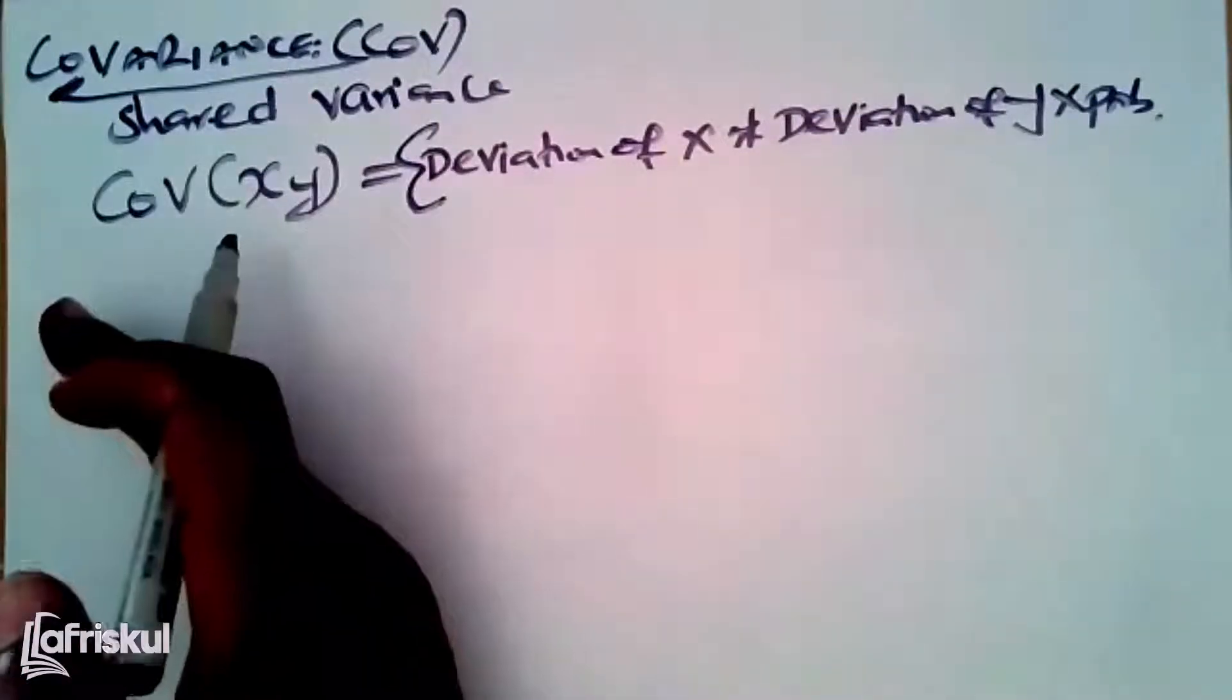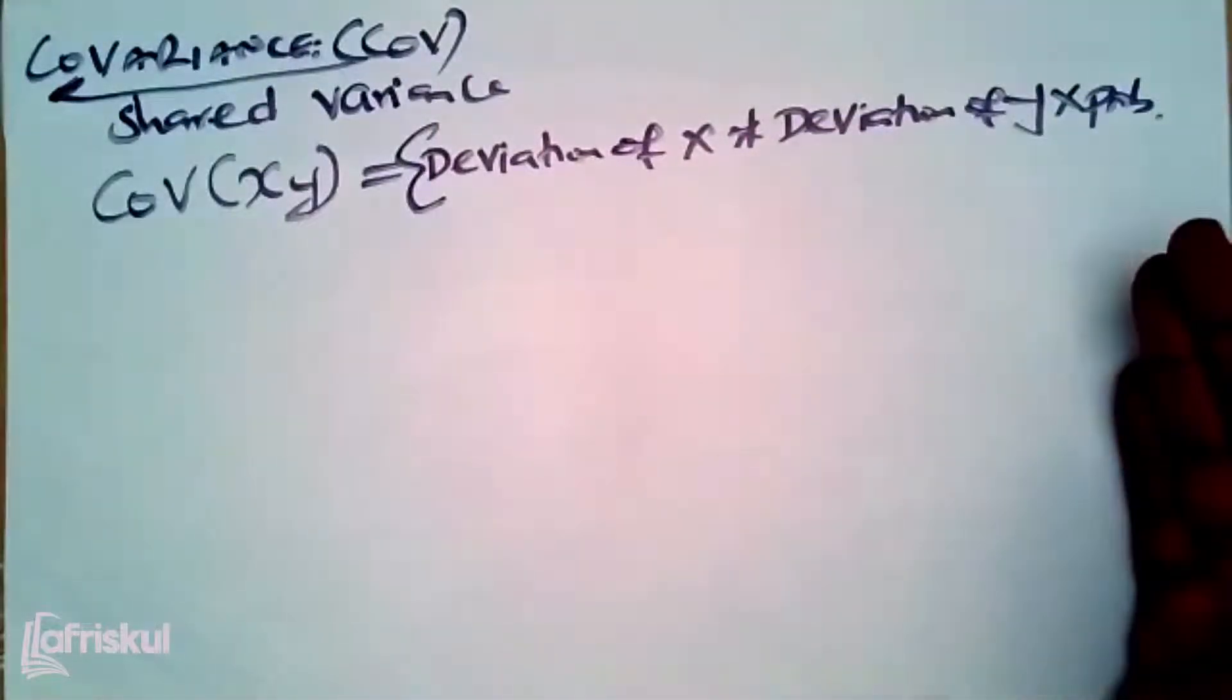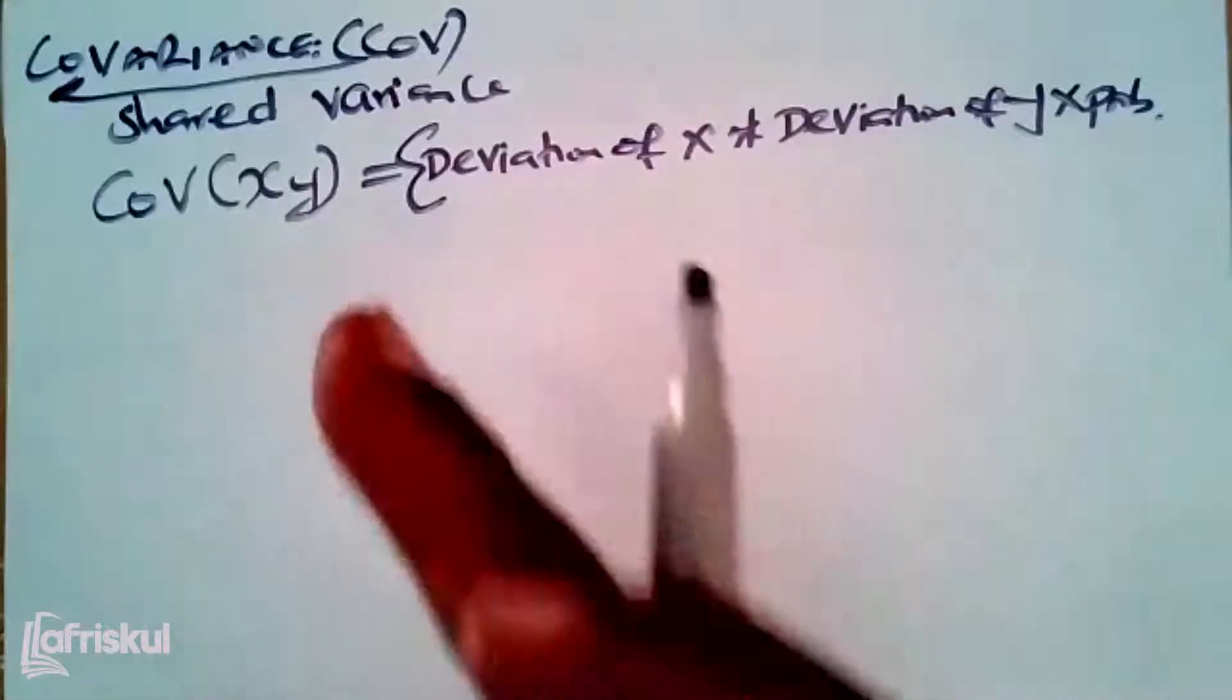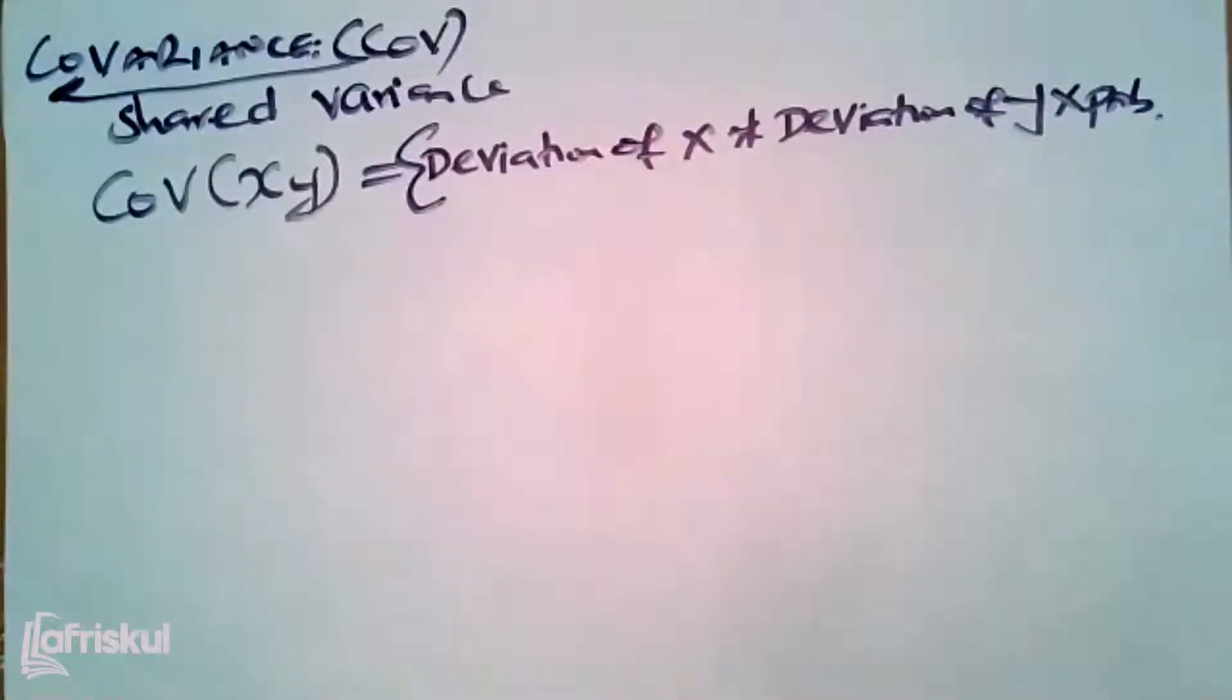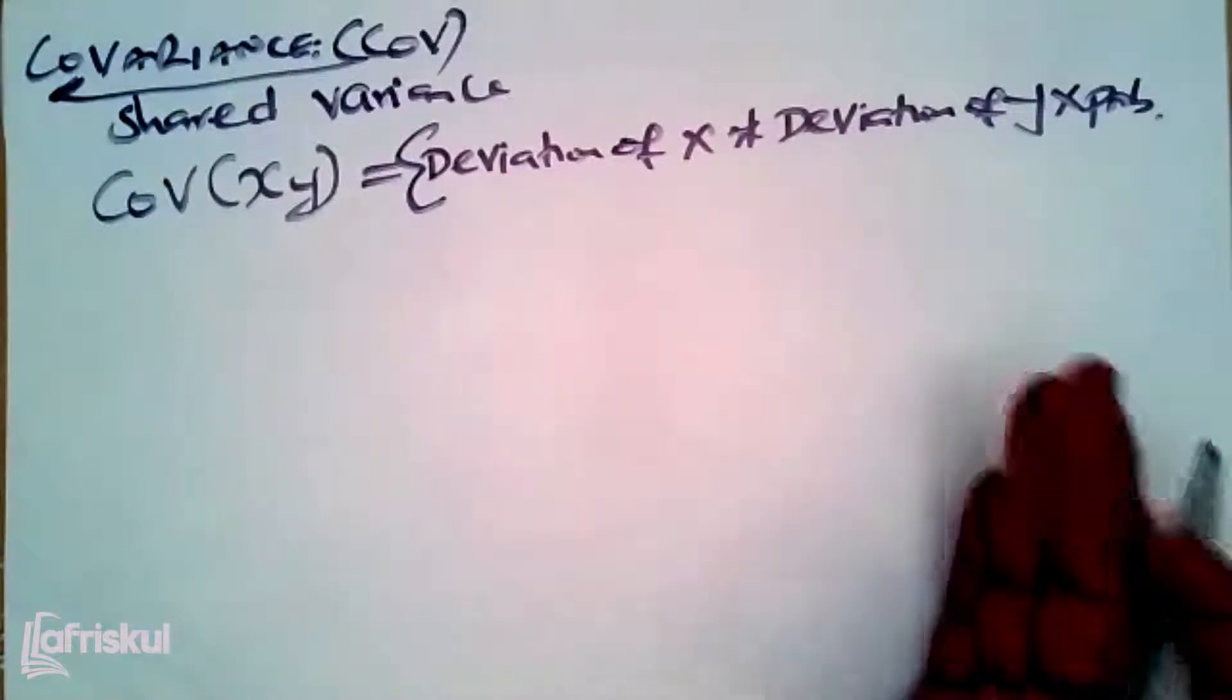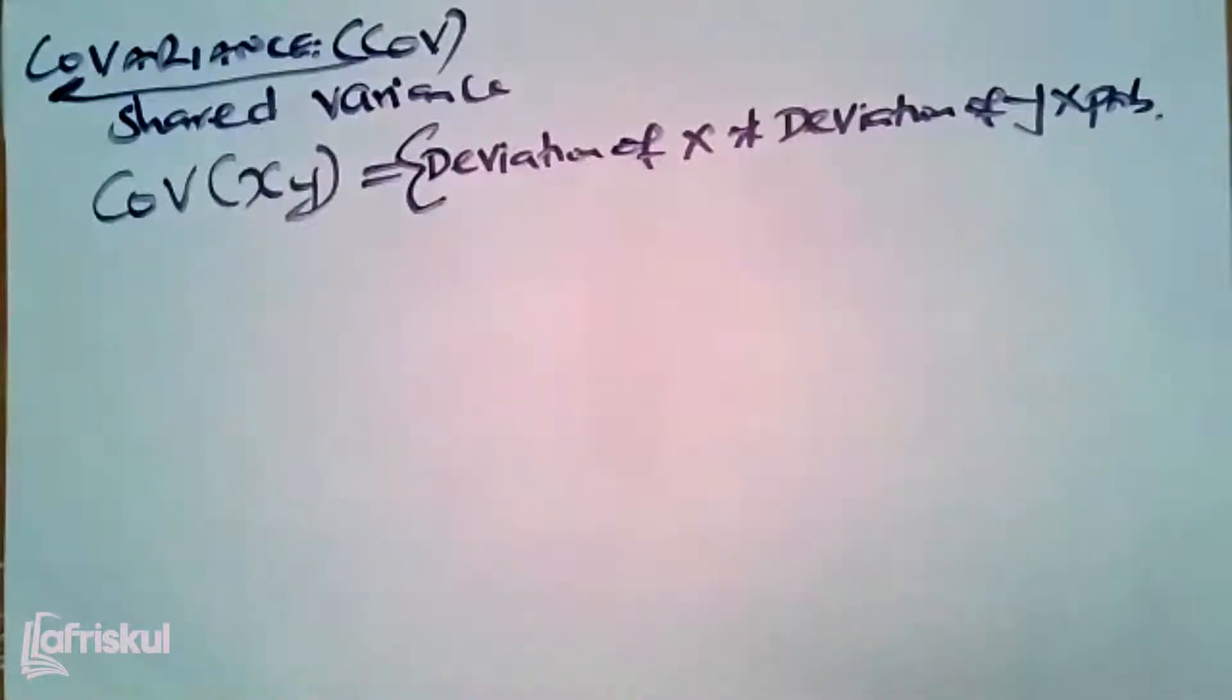So it's a common thing. What we shall do is take the deviation of the first one multiplied by the deviation of the second one. Because of the uncertainties, you must always incorporate the probabilities, and then you sum.